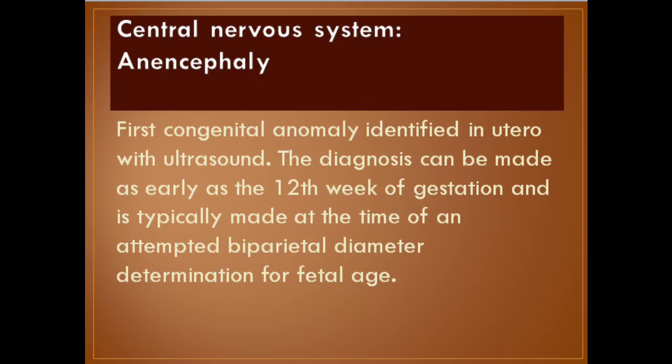Number one: anencephaly. It is the first congenital anomaly identified in utero with ultrasound. The diagnosis can be made as early as the 12th week of gestation and is typically made at the time of an attempt at biparietal diameter determination for fetal age.